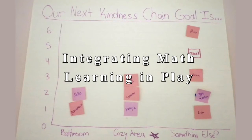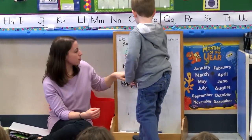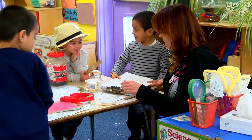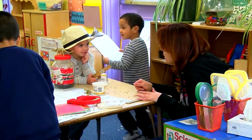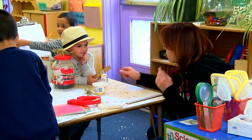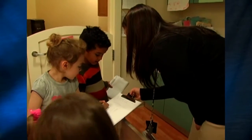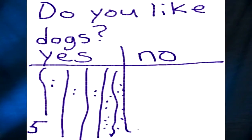Once children have experience comparing data, they can be supported to integrate this strategy on their own during playtime. My kids started doing their own surveys. They started going around with clipboards. They came up with their own questions, and then they had kids write their names. They found out who likes dogs, who likes cats. So they became interested in each other.